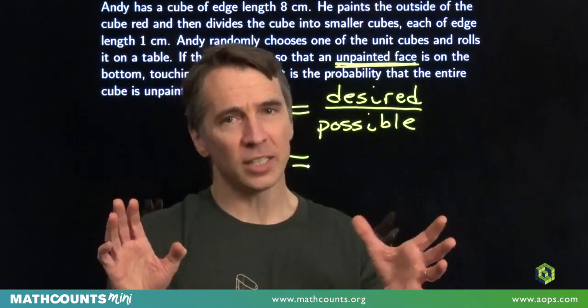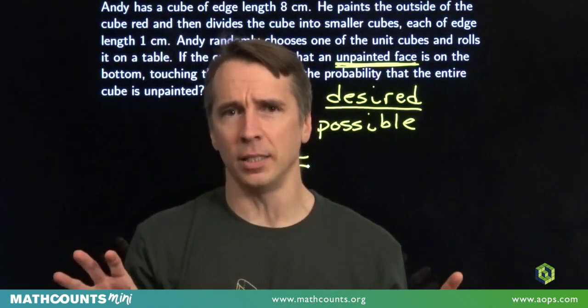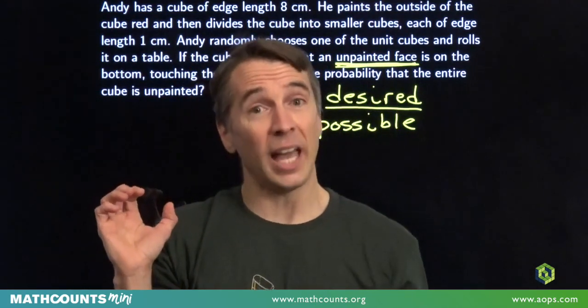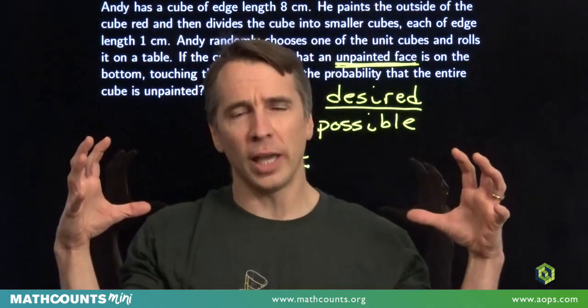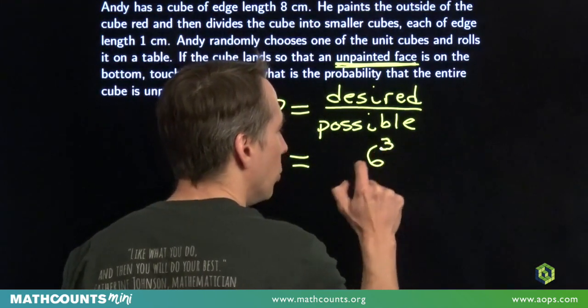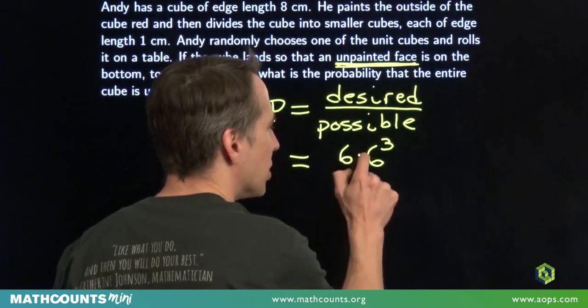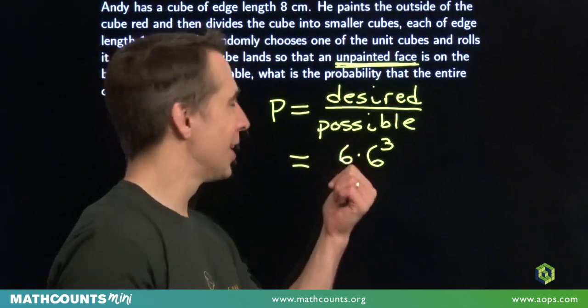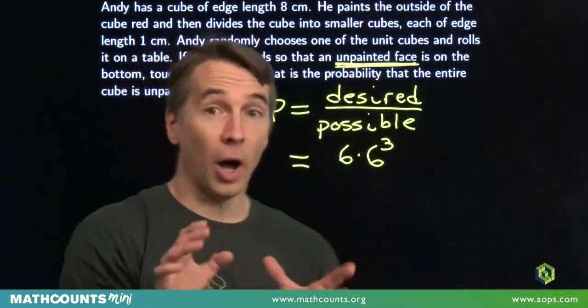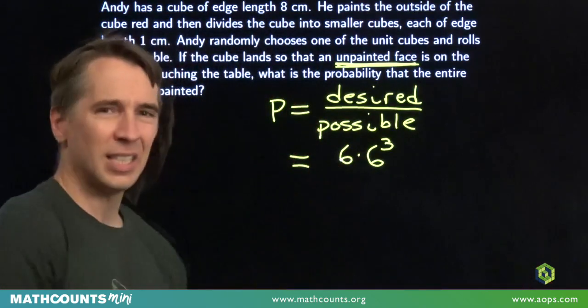And we're going to start off here with the desired outcomes. The desired unpainted faces are the ones on all those interior cubes, all those little unit cubes with no faces painted. And we find all those interior cubes by removing the outside faces of that 8 inch cube. You remove that outer layer, you're left with a 6 inch cube. So there are 6 cubed unit cubes in the interior that have no painted faces. Each of those 6 cubed cubes has 6 unpainted faces. So our desired outcomes, the number of unpainted faces that are sitting on that table that come from one of these completely unpainted cubes, is 6 times 6 cubed.